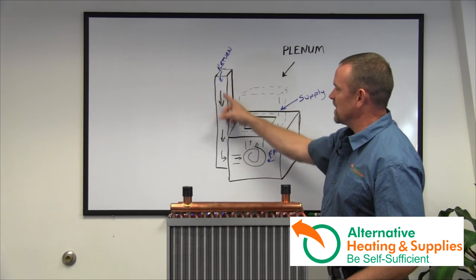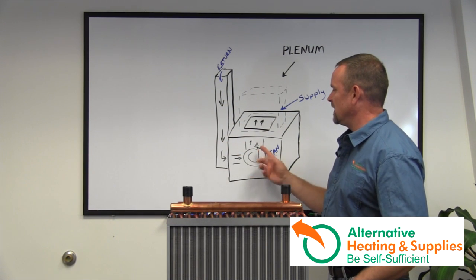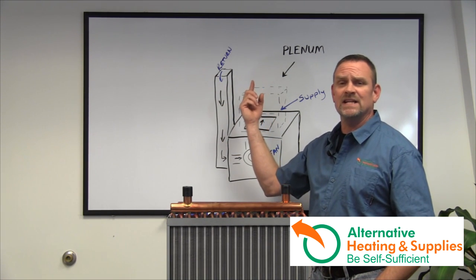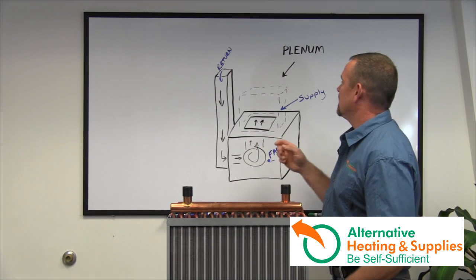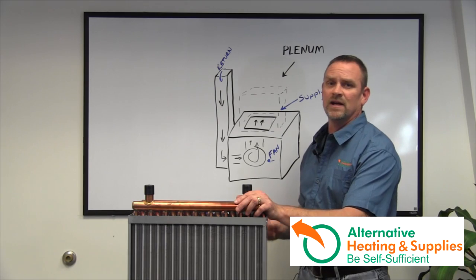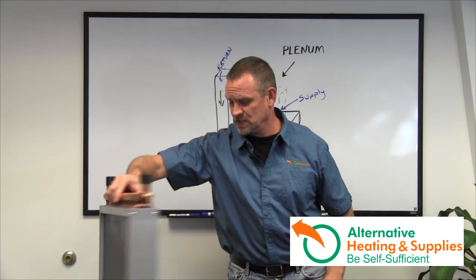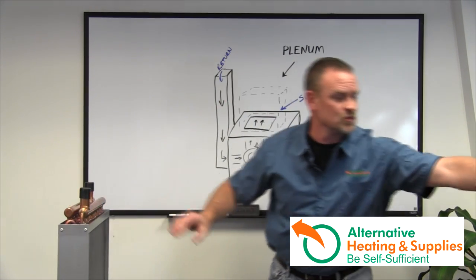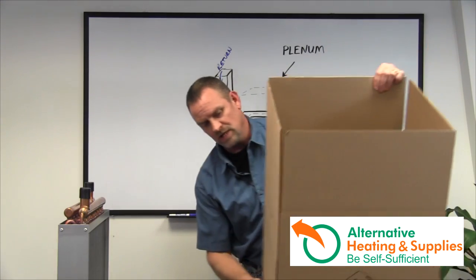But what happens is the air gets returned from the house, it gets pushed through a fan and it gets shot back through, reheated and sent back through the house. And what I'm going to do here is I'm going to use this dotted area and I'm going to use a cardboard box because that's going to make it the easiest for us to work with to give you an idea of what we're doing.